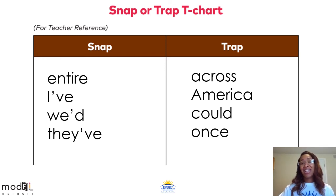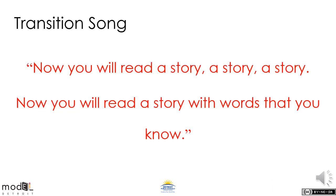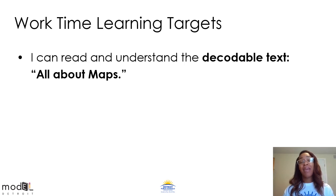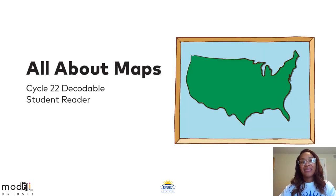All right, guys, that's my list for today. Let's continue to move forward with today's lesson. Please assist me in reading our second set of work time learning targets: I can read and understand the decodable text All About Maps. Please turn to page 136 in your distance learning packet. There you will find the decodable text All About Maps.